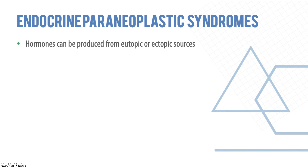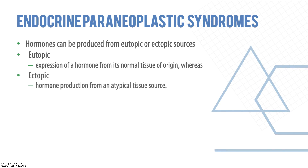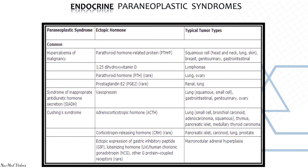In endocrine paraneoplastic syndrome, hormones can be produced from eutopic or ectopic sources. Eutopic is expression of a hormone from its normal tissue of origin, whereas ectopic is a hormone produced from an atypical source. This ectopic expression leads to high levels of hormones, abnormal regulation of hormone production, and abnormal peptide processing.